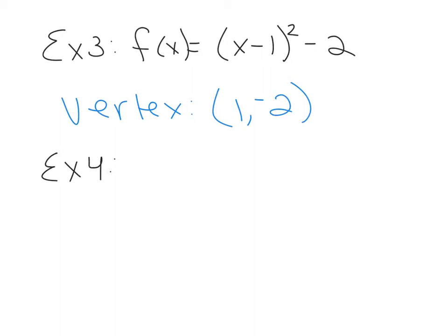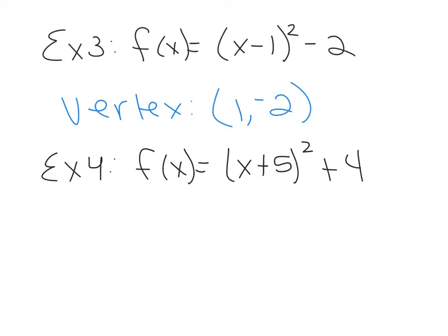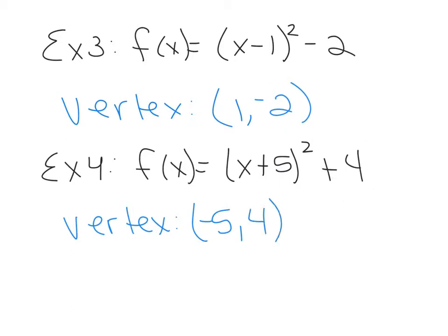Example 4: find the vertex by inspection. The function is x plus 5 squared plus 4. The inside term gives the x-coordinate with the opposite sign, so the x-coordinate will be negative 5. The outside term gives the y-coordinate, which is positive 4. So the vertex for this function is (−5, 4).